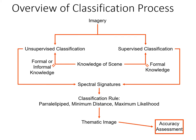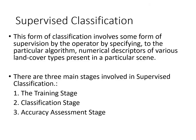We've gone through unsupervised classification. We're now going to go through supervised classification. Supervised classification requires some supervision — you need to specify to whatever algorithm you use a numerical description of various land cover types present in a given scene. That means you first have to determine what classes you're going to need to use, and then you're going to collect information in the form of training samples to define the spectral characteristics of each one of those classes.